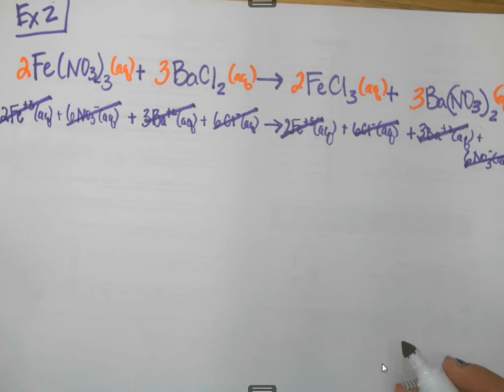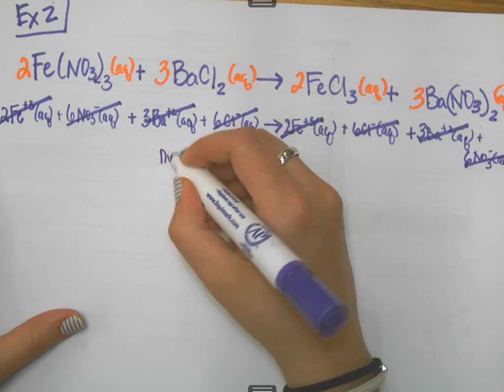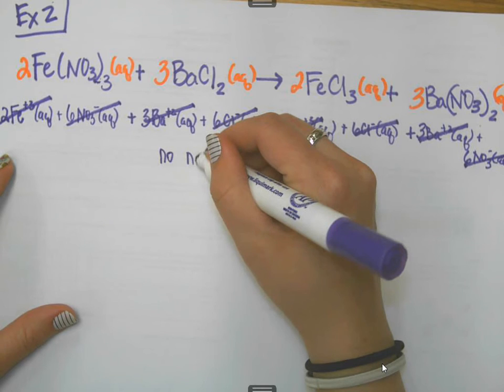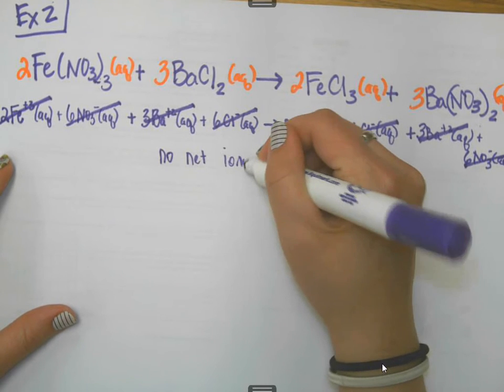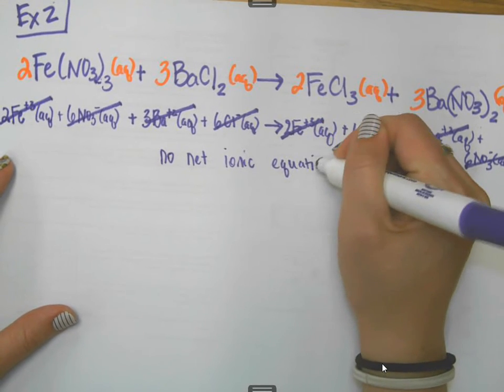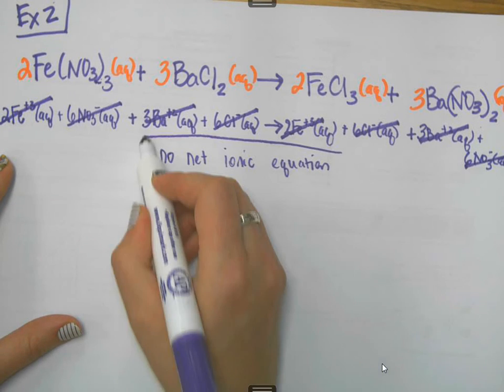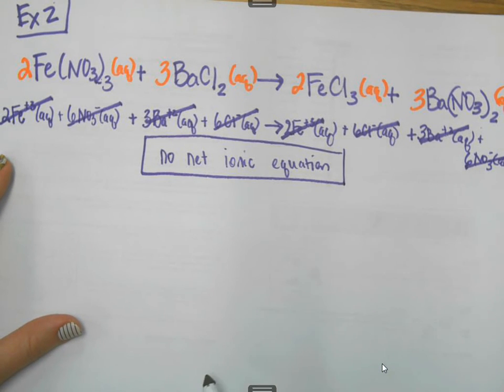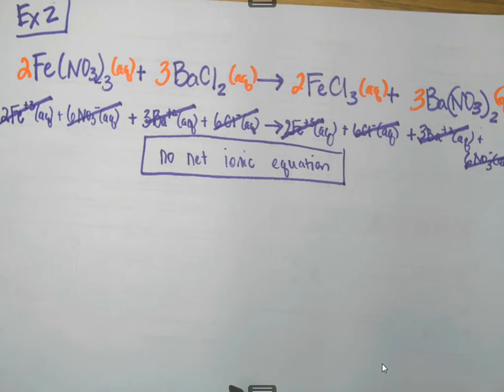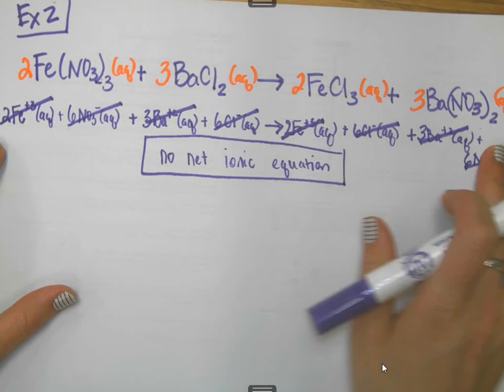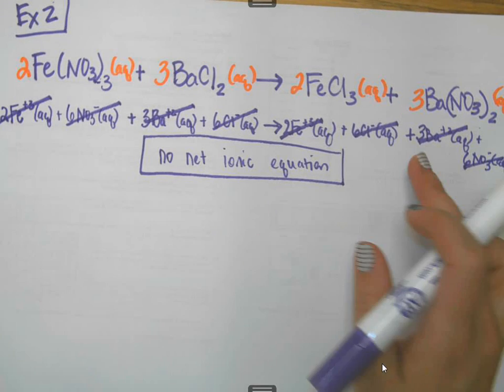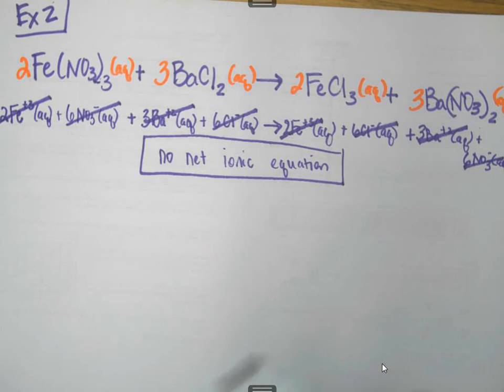Sometimes it's possible that you get a reaction where everything cancels. And, if that's the case, then what I'm going to write down as a net ionic equation is no net ionic equation. That will be my final answer in this case. There's one more possibility, and that possibility is that sometimes nothing will cancel. It is entirely possible to end up with a reaction where nothing cancels out. And, if that's the case, then this middle step where you've broken up things would basically just be your final equation.